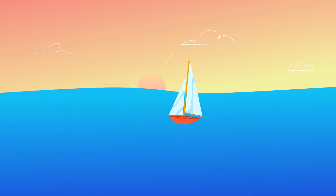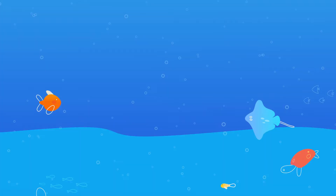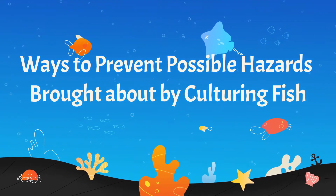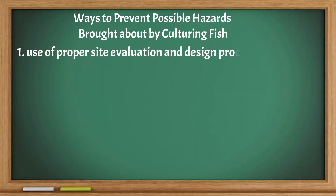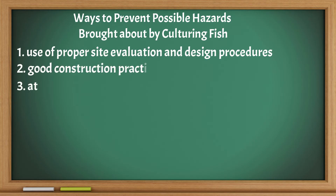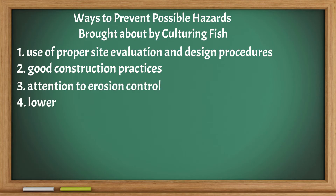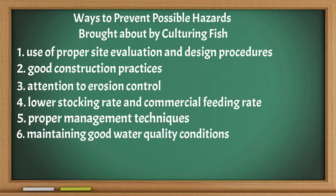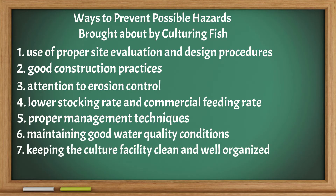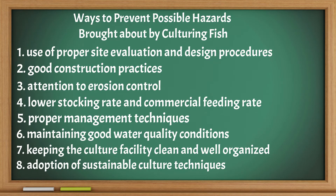Ways to prevent possible hazards brought about by culturing fish: use of proper site evaluation and design procedures; good construction practices; attention to erosion control; lower stocking rate and commercial feeding rate; proper management techniques; maintaining good water quality conditions; keeping the culture facility clean and well organized; and adoption of sustainable culture techniques.